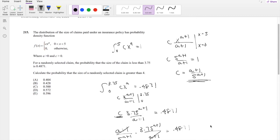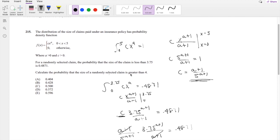All right, let's look at what we're actually looking for. Probability the randomly selected claim is greater than 4, but we know this x is only valid for up to 5, so the upper limit's 4 to 5 of the same function, c of x^a.